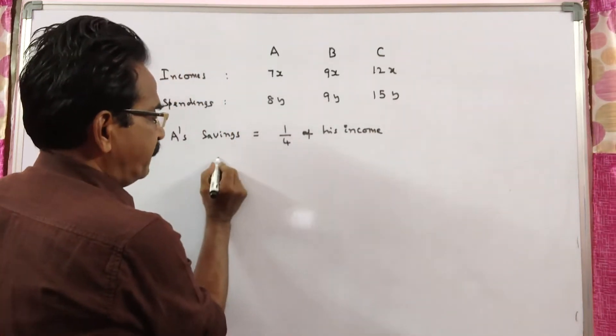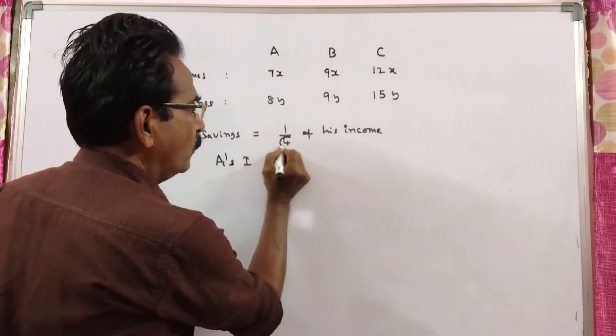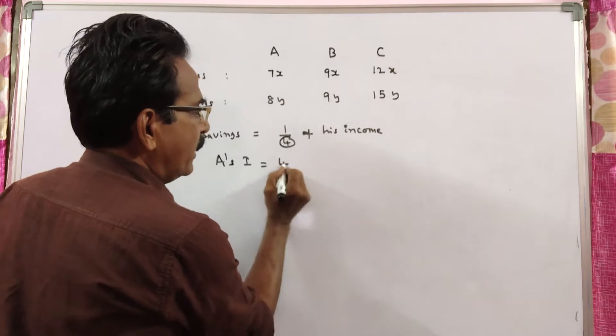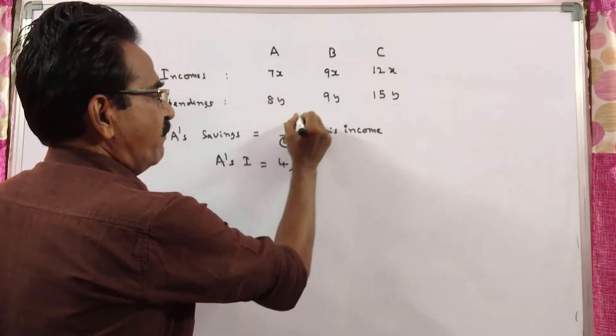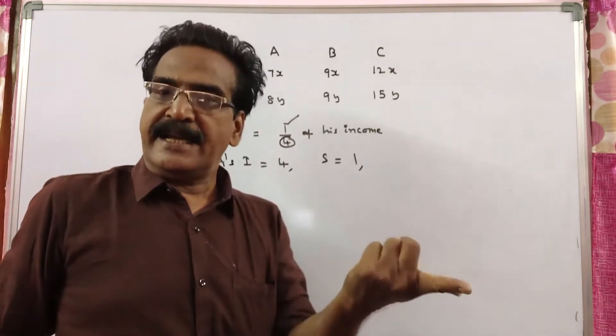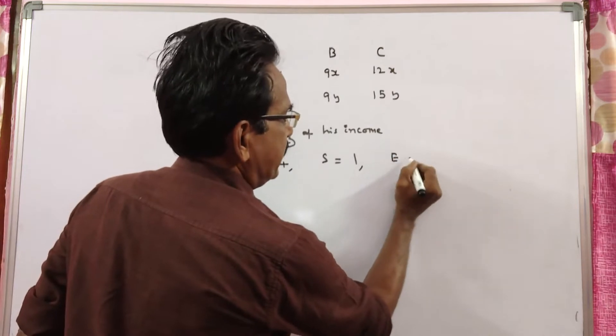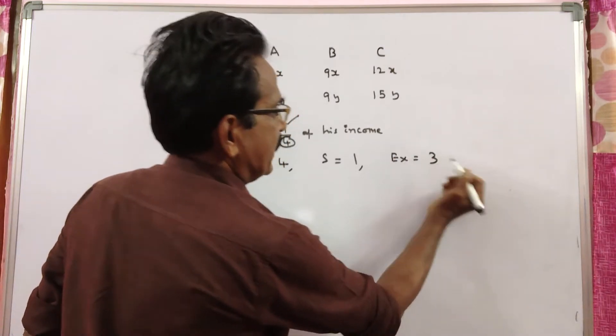That means if A's income is 4, then his savings is 1. Income is 4, his savings is 1 and expenditure is income minus savings. So expenditure is equal to 4 minus 1, which is 3.